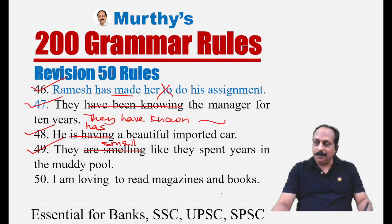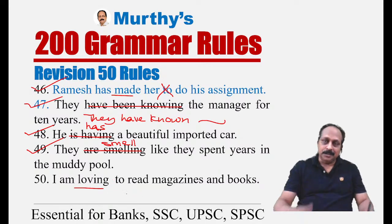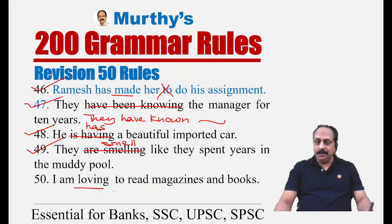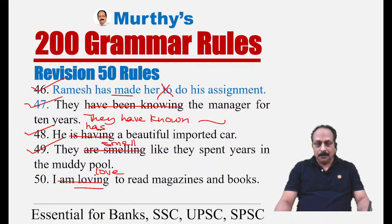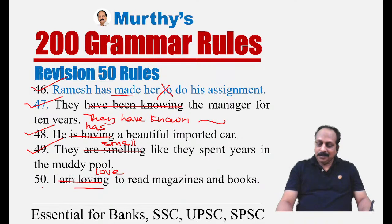Sentence fifty: 'I am loving to read magazines and books.' Verbs related to emotions like 'love' cannot be used in ING form. 'I am loving' is incorrect. The correct sentence: 'I love to read magazines and books.' Sense verbs to remember: hear, taste, smell, touch, see — none can be used in ING form, though exceptions apply.